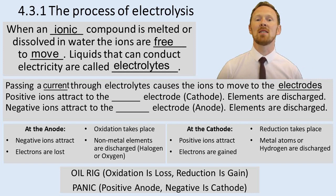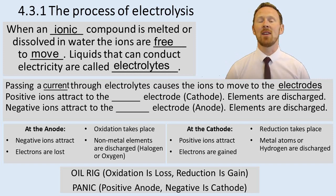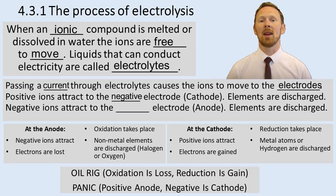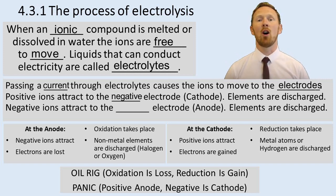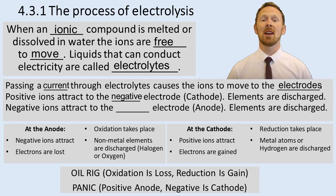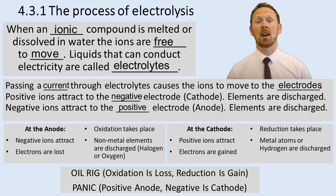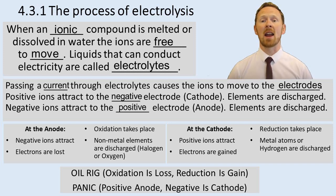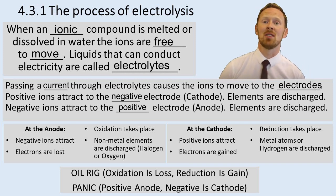Positive ions attract to the negative electrode, and that's called the cathode. When they get there, either oxidation or reduction takes place, and elements are discharged. The negative ions attract to the positive electrode, because they're attracted to the oppositely charged electrode, and that's called the anode. Again, elements are discharged.